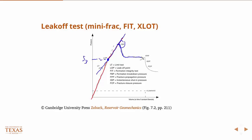At some point you'll reach a relatively constant pressure — this is where you've basically filled your fracture with fluid and it's propagating at more or less a constant rate. This is called the fracture propagation pressure. You'll notice that the fracture propagation pressure is roughly equal to the leak-off point; they correspond relatively well. So this is your second measure of the minimum horizontal principal stress.